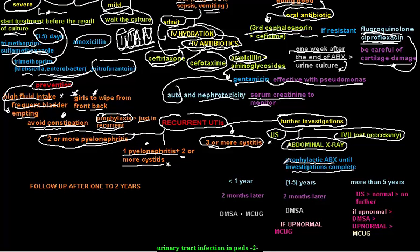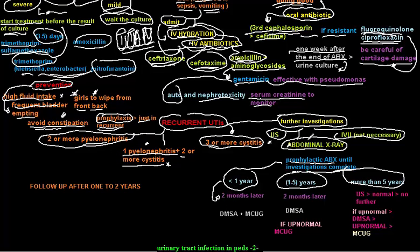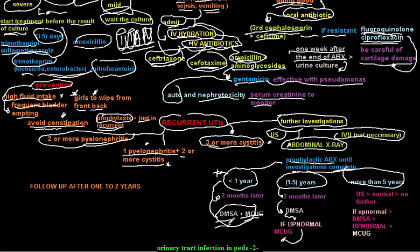The type of further investigations depends on the age of the child. In children below one year, two months after ultrasound and X-ray, we do both a DMSA scan and an MCUG. In children between one to five years, two months after ultrasound we do a DMSA scan first; if the DMSA scan is abnormal, then we proceed to MCUG.